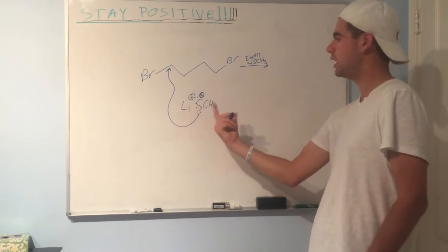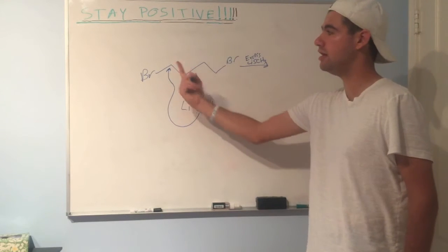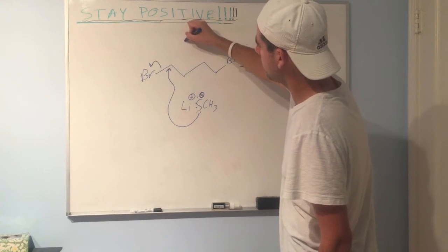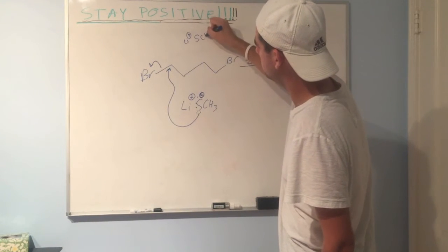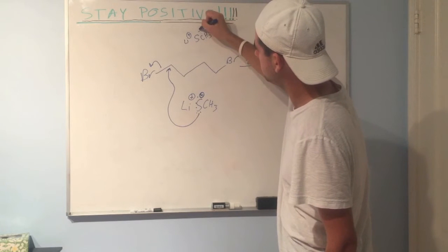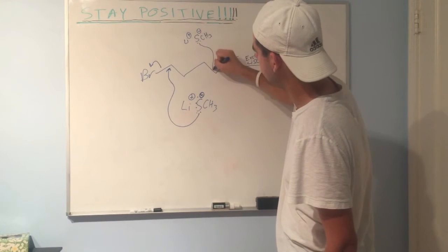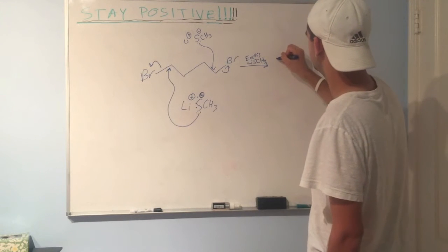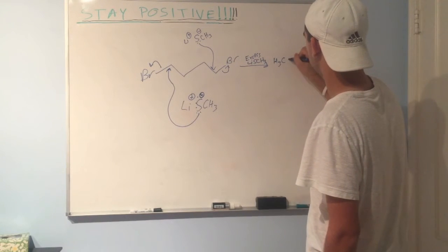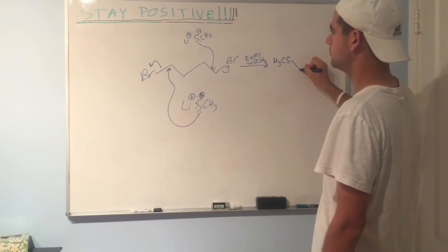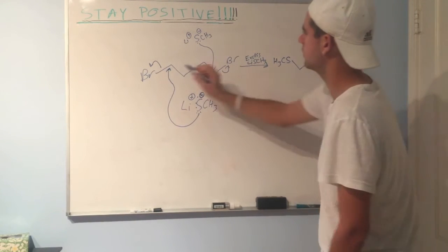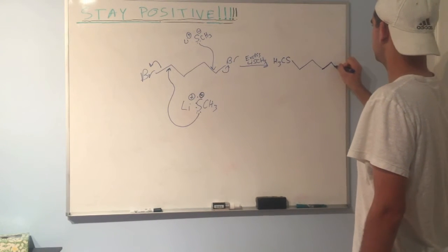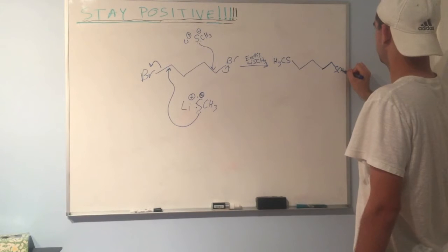One unit of LISCH3 will attack this, send those electrons to bromine. Another unit, we can draw that up here, will attack this electrophilic carbon. And your product will look something like this. One, two, three, four carbons. One, two, three, four carbons. And there you go.